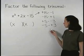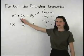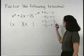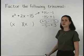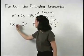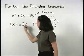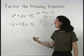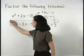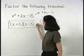So which pair of factors adds to positive 2? Positive 5 and negative 3. So we use these two numbers in our two binomials, which gives us our answer of x plus 5 times x minus 3.